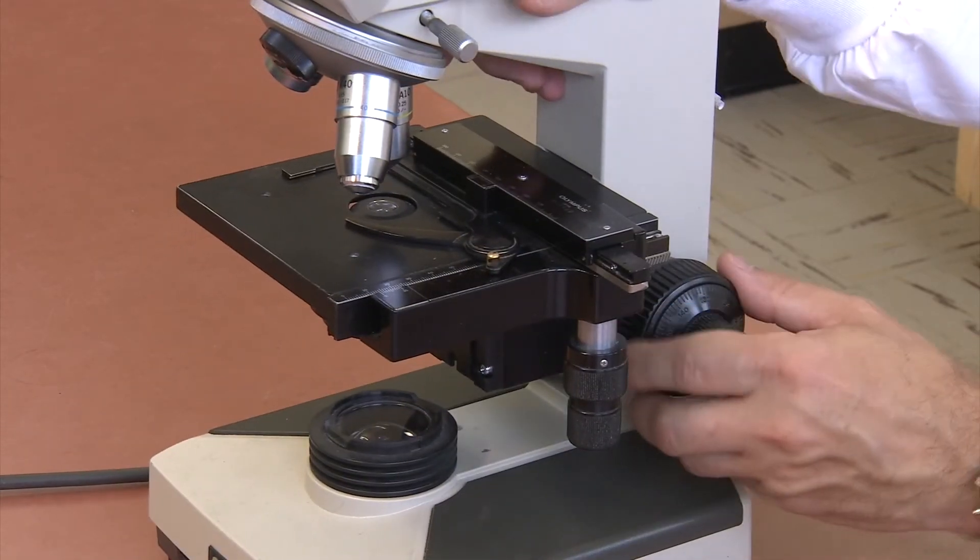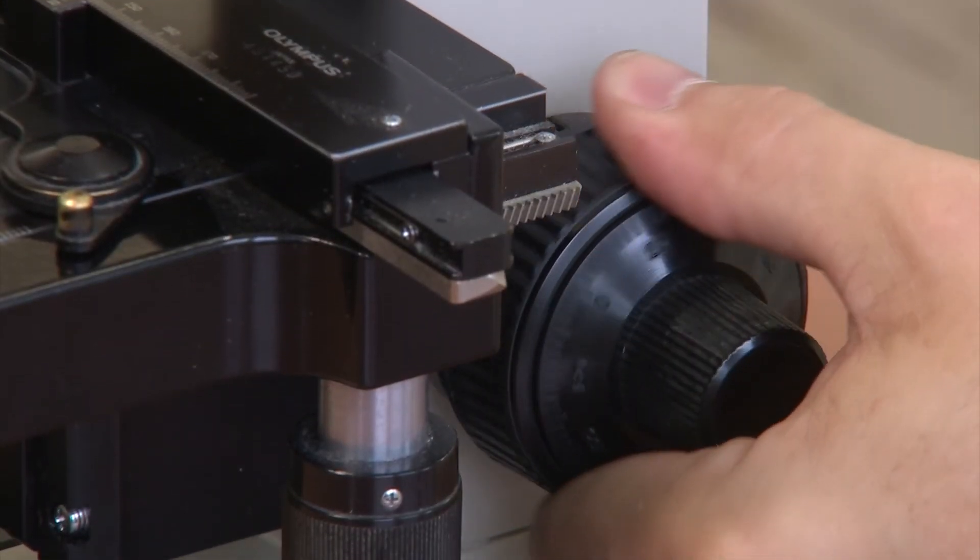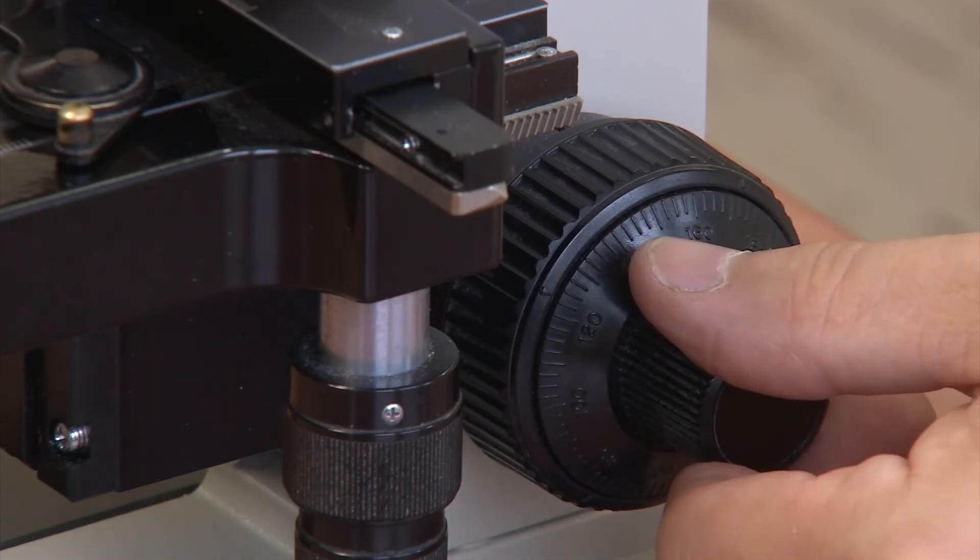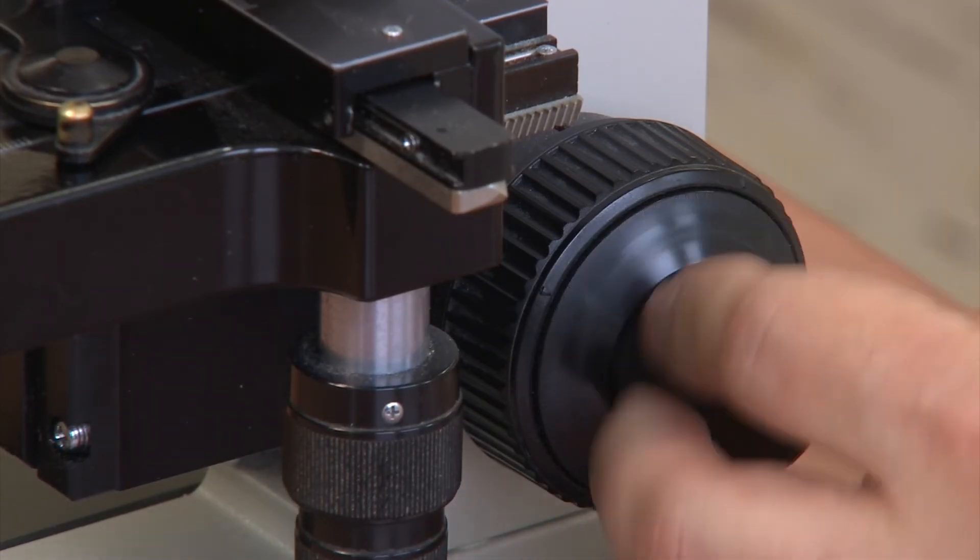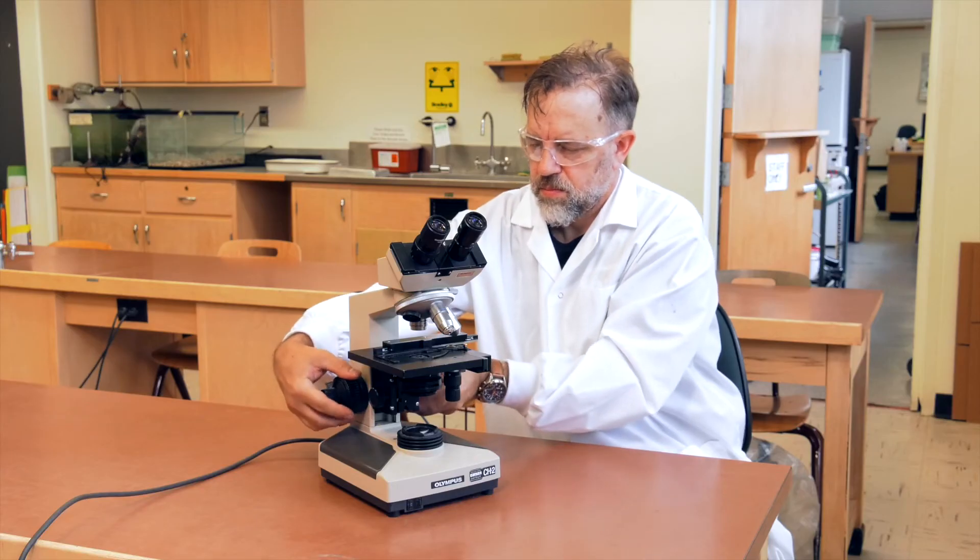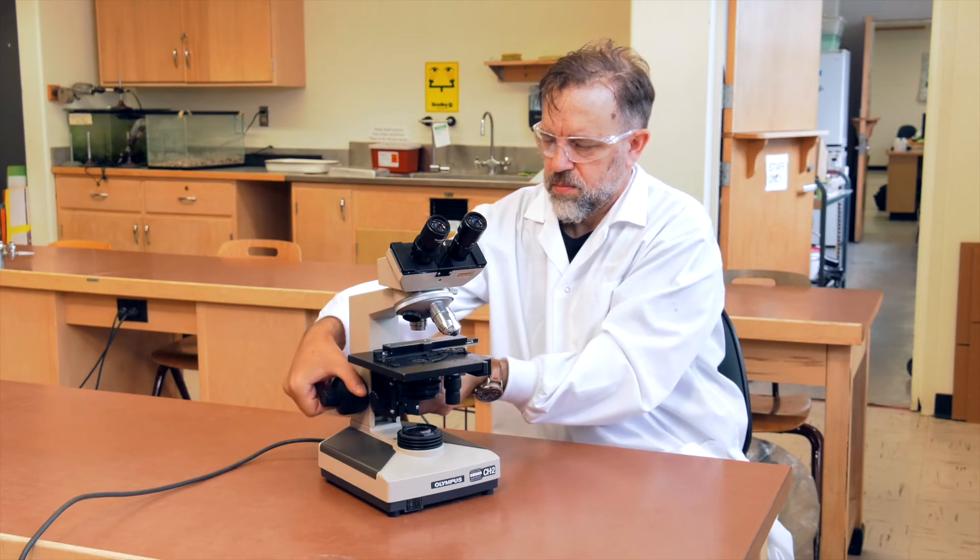At the base of the arm are the coarse and fine focus adjustment knobs. These are on both sides of the arm. The coarse focus is larger and closest to the arm, and the fine focus is smaller and is set in the center of the coarse focus. These knobs adjust the height of your stage, which allows you to focus on your specimen.